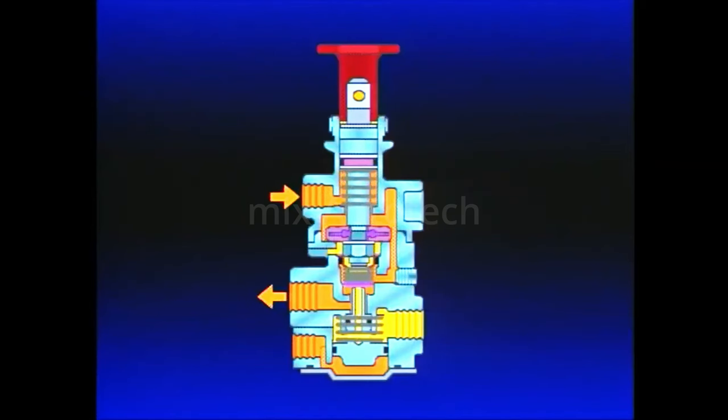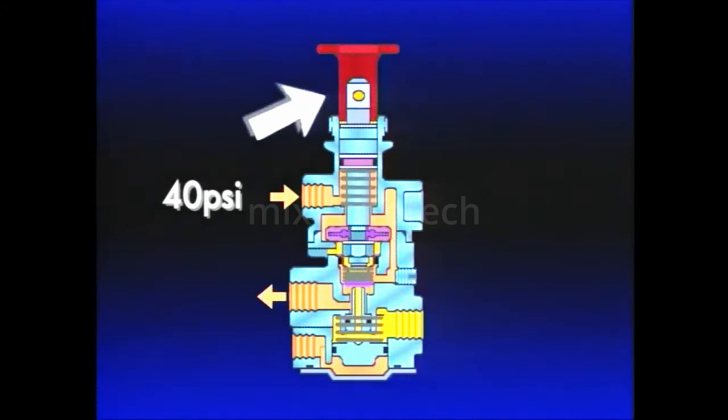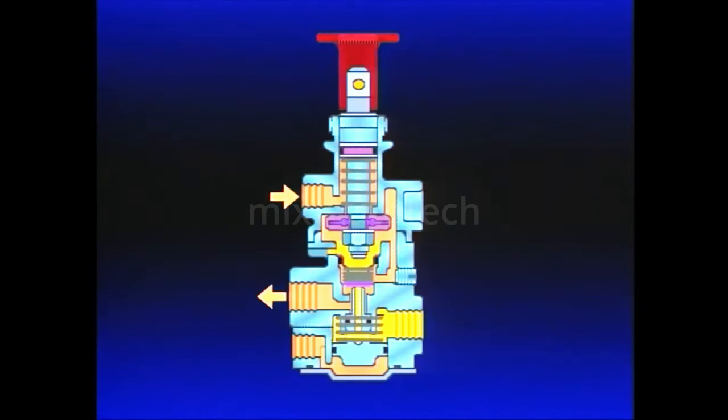If tractor air system pressure falls to approximately 40 PSI during vehicle operation, the PP7 button will pop out. Air from the trailer's supply line is exhausted at the PP7. This preserves the last 40 PSI of tractor air pressure and causes the trailer parking brakes to apply. Note that the synchro piston remains unaffected.